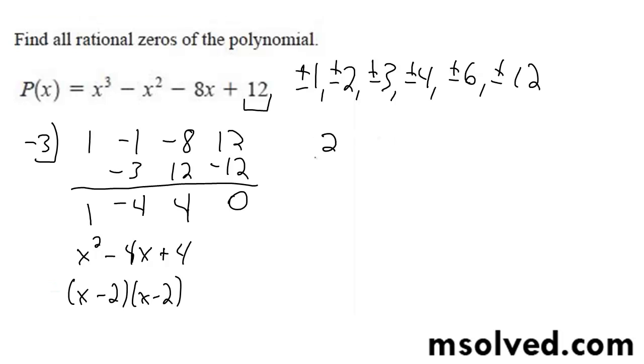So let's try out 2. I get 1, negative 1, negative 8, 12. Bring down this 1, I get 2, I get 1, gives me 2, gives me negative 6, 2 times negative 6, negative 12, gives me 0.